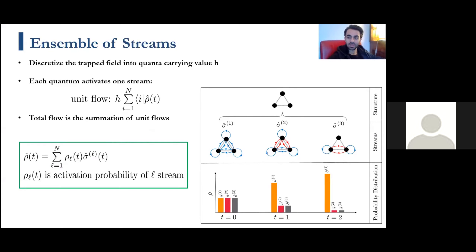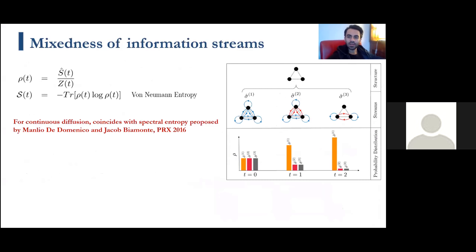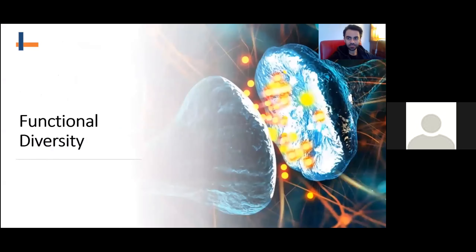The unit flow is governed by an operator ρ which is a superposition of information streams multiplied by their activation probabilities. This is reminiscent of quantum statistical physics where the density matrix is defined as a superposition of quantum states multiplied by their probabilities. This matrix is a good way to define the state of a complex system at multiple propagation timescales, showing lower- to higher-order interactions. We can also define the mixedness of information streams using the von Neumann entropy, which coincides with the spectral entropy proposed in 2016.